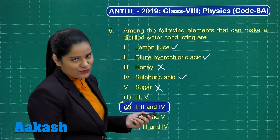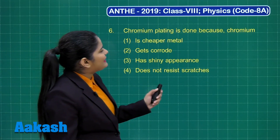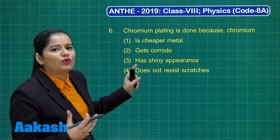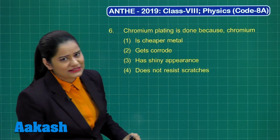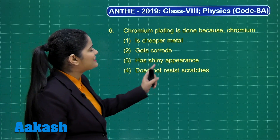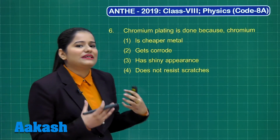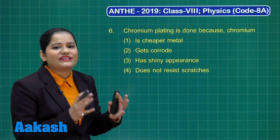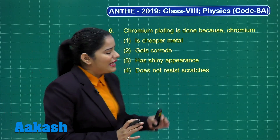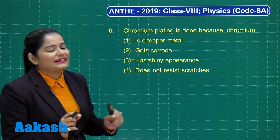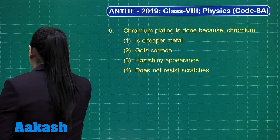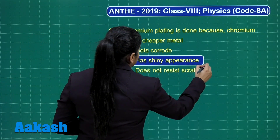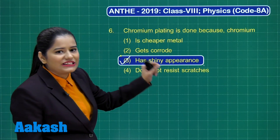Let's proceed to the next question. This question says: chromium plating is done because chromium is — option 1: a cheaper metal; option 2: it gets corroded; option 3: it has a shiny appearance; option 4: does not resist scratches. We know the plating of chromium is done because chromium has a shiny appearance, it does not get corroded, and it resists scratches. The correct option is option number 3, which says it has a shiny appearance. The correct option for this question is option number 3.